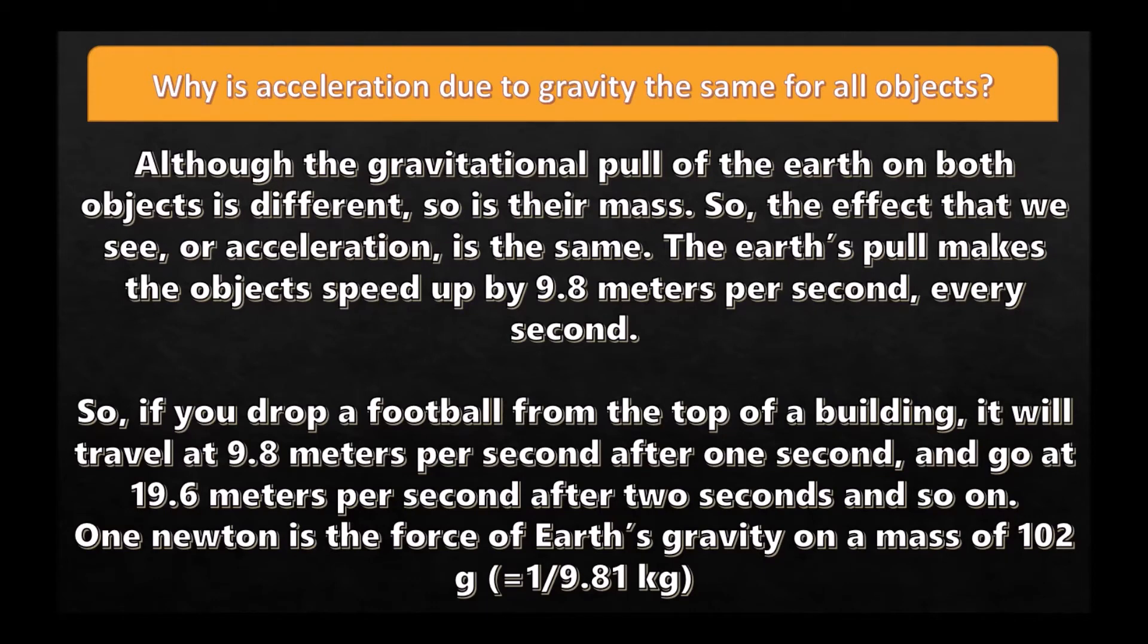The Earth's pull makes objects speed up by 9.8 meters per second every second. So if you drop a football from the top of a building, it will travel at 9.8 meters per second after one second, and go at 19.6 meters per second after two seconds, and so on.